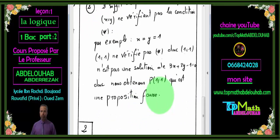On a bien sûr consacré cette partie numéro 2 à la fonction prépositionnelle pour mettre en évidence la différence qui existe entre une proposition et une fonction prépositionnelle. Soyez au rendez-vous pour la partie numéro 3 pour attaquer les quantificateurs : « quel que soit », « il existe », « il existe un seul », et on va définir des propositions quantifiées, avec des exercices d'application divers.